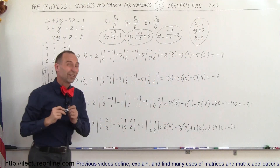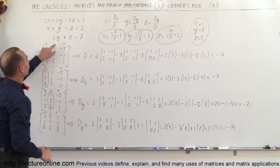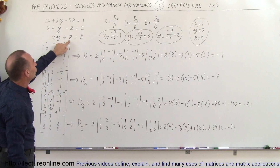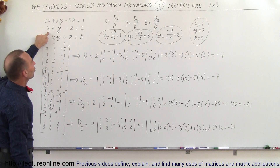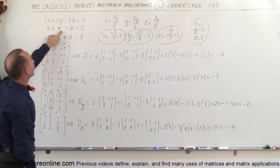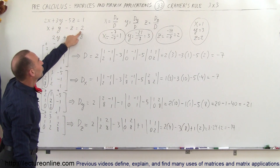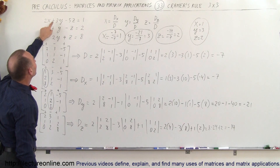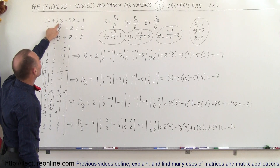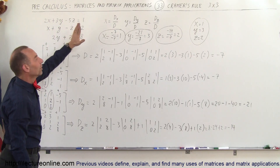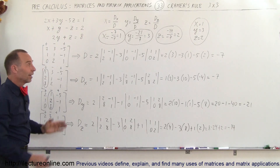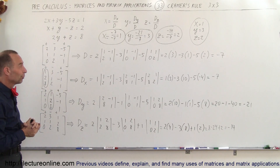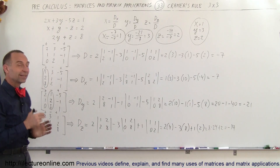A quick check confirms we're correct. 2 times y (2 times 3 is 6) plus z (which is 2) gives 8 — correct. x (1) plus y (3) equals 4, minus z (2) equals 2 — correct. And 2 times x (2 times 1 is 2), plus 3 times y (3 times 3 is 9), gives 11, minus 10 equals 1 — correct. Those are the solutions to our system of linear equations using Cramer's rule for a 3 by 3 matrix. And that's how it's done.